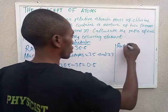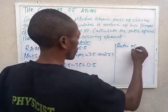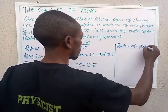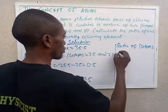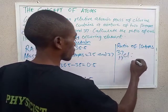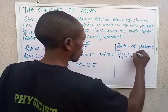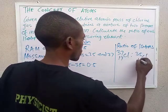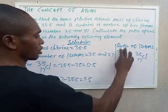The ratio of the isotopes will be chlorine-37 to chlorine-35, which is 1.5 to 0.5.